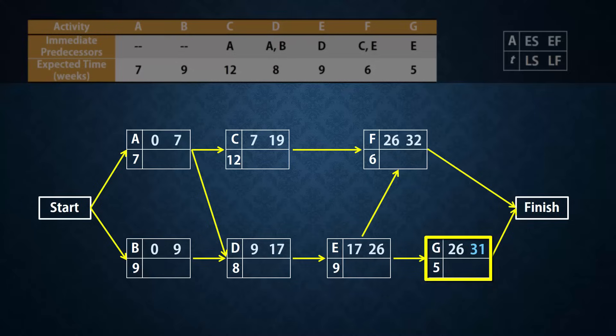Note that although G is the last letter, it doesn't have the highest earliest finish time because F has 32. So we say that the project's completion time is 32 weeks. In essence, the project's completion time is the highest of the earliest finish times at the finish node.